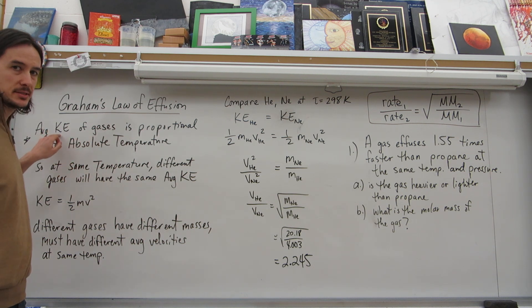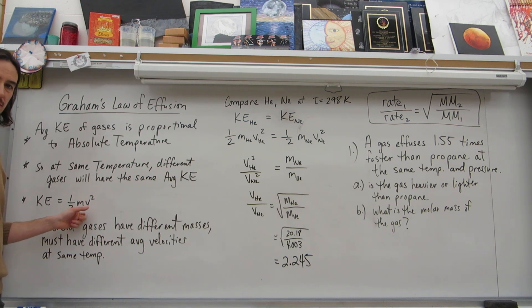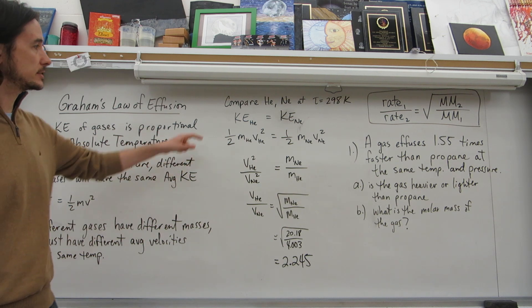It's kinetic energy that's the same. It's not velocity. So at the same temperature, different gases have the same average kinetic energy. Kinetic energy is one-half mv squared. Different gases have different masses. Therefore, they must have different velocities. They have the same kinetic energy, but that changes.